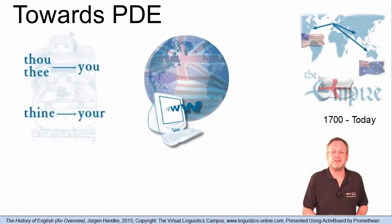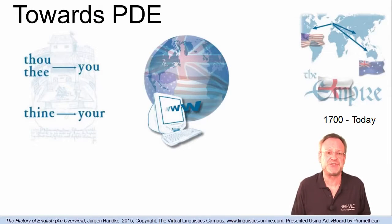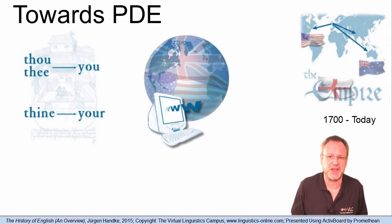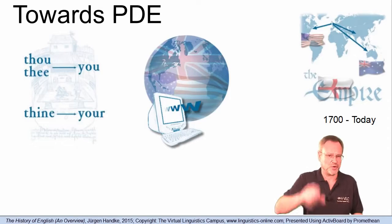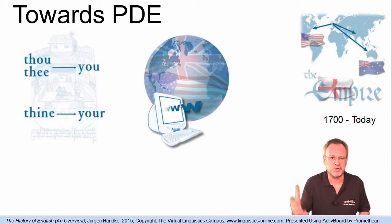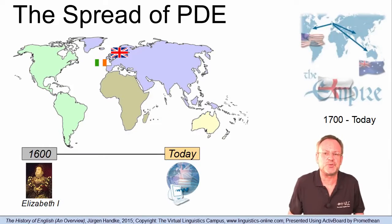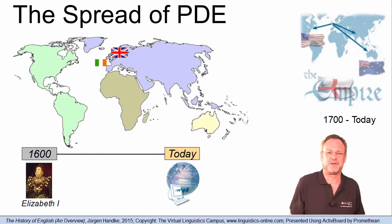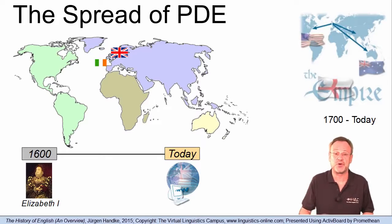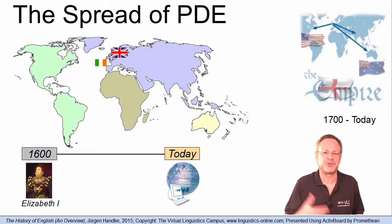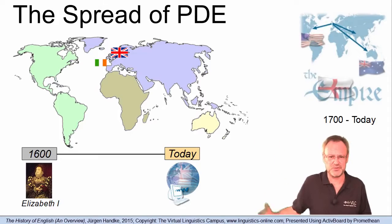By about 1700, the English language differed only slightly from present-day English. The most important development was external: it concerned the position of the English language among the languages of the world. From a regional language, it developed to the most widely used language of our time. The first significant step in the progress of English towards its status as a global language did not take place before the end of the 16th century. By the end of the reign of Elizabeth I in 1603, literature had boomed through the works of Spenser, Marlowe and Shakespeare, and Francis Drake and Walter Raleigh had laid the foundation for expanding English influences in the new world.